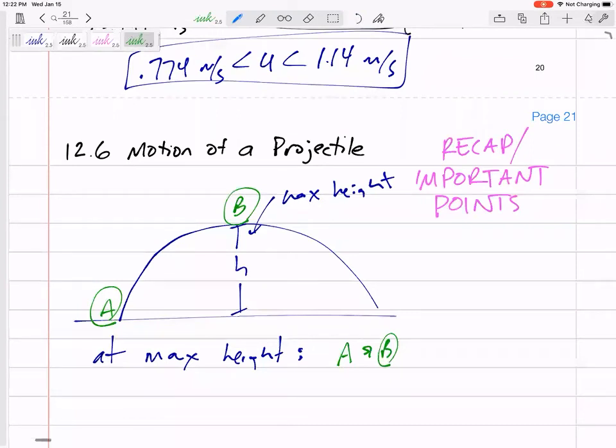Yeah, exactly. Velocity in the Y is equal to zero. So at maximum height, maybe this VF squared equals VI squared plus 2AD. And I would set VF, again this is just Y direction, I'd set VF...